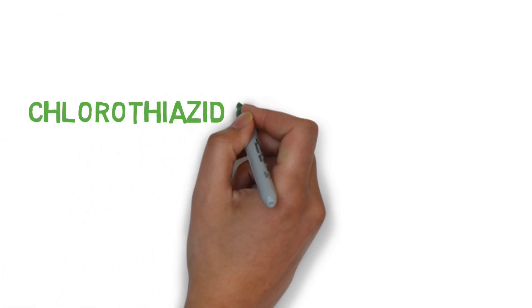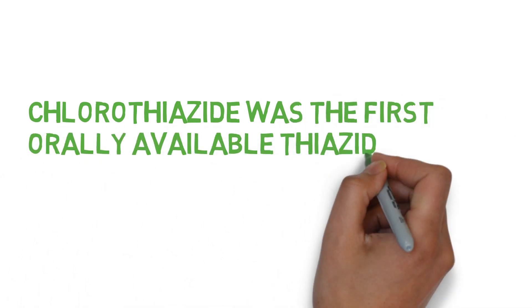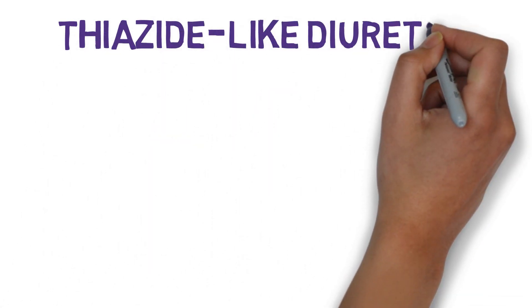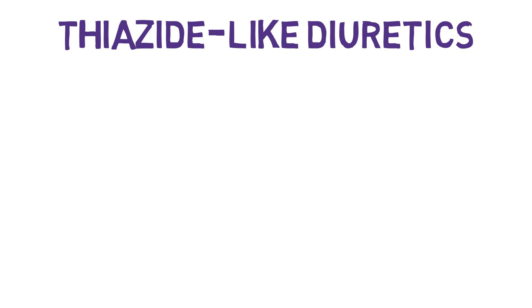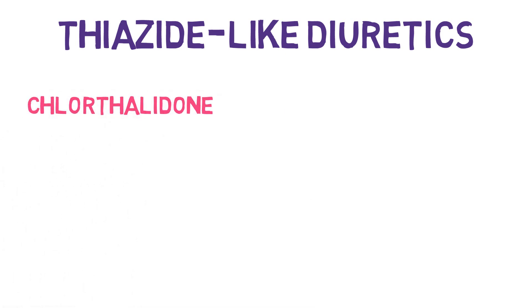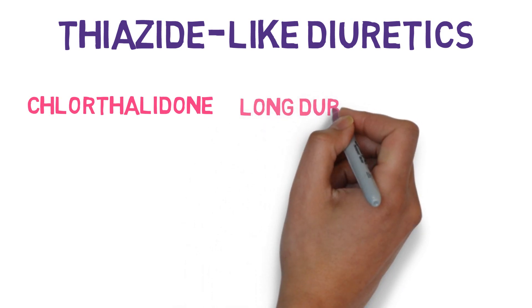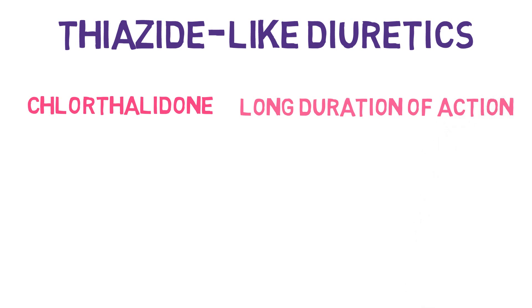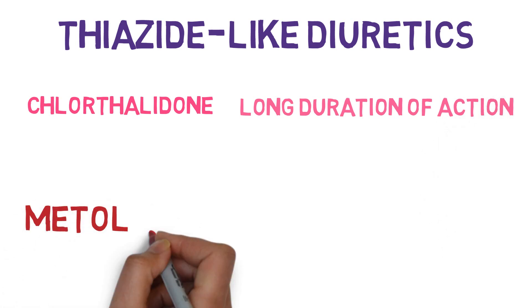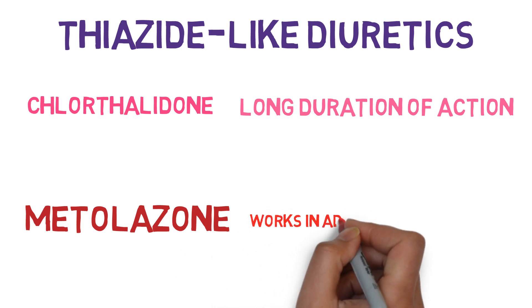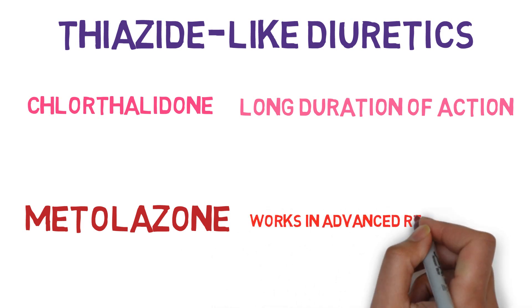Chlorothiazide is the first orally available thiazide diuretic. However, recently new thiazide-like diuretics have been introduced like chlorothalidone, which is a non-thiazide that behaves pharmacologically like hydrochlorothiazide with an advantage of long duration of action. Metolazone is another thiazide-like drug that is more potent and, unlike thiazides, causes sodium excretion in advanced renal failure.